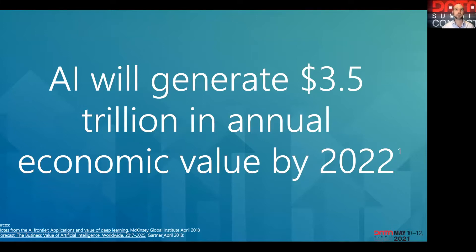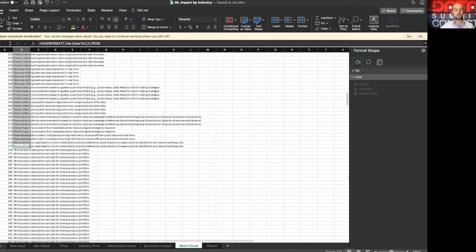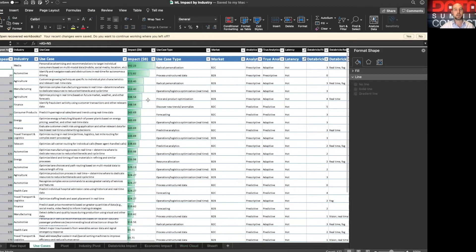One of the best ways to determine what lake houses are good at is to look at AI and analytics use cases. The best source I've found is a study from the McKinsey Global Institute, with the headline that AI will generate $3.5 trillion in annual economic value by next year. I highly recommend the article 'Notes from the AI Frontier' to anyone interested in understanding how businesses are putting AI to use to extract value from data. I like it because it was based on 400 use cases and they shared a lot of their data, so we're able to analyze it and understand all of those different use cases.